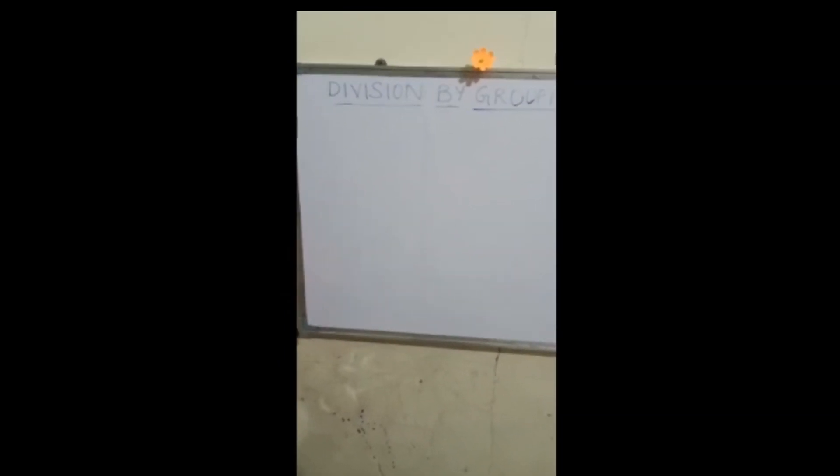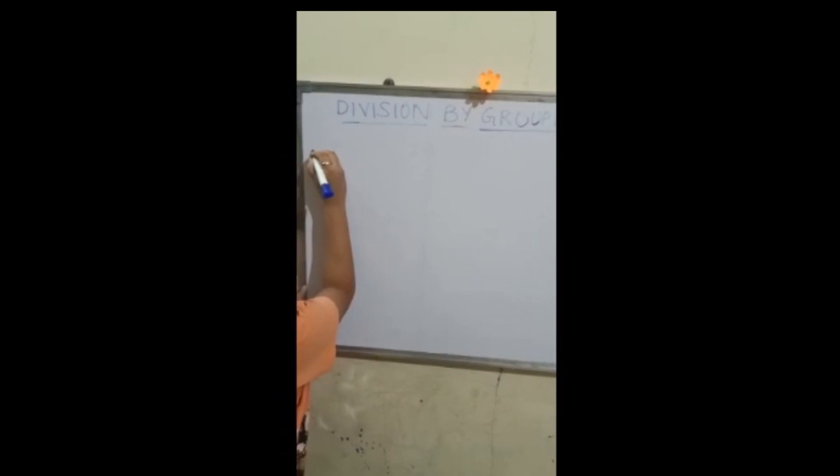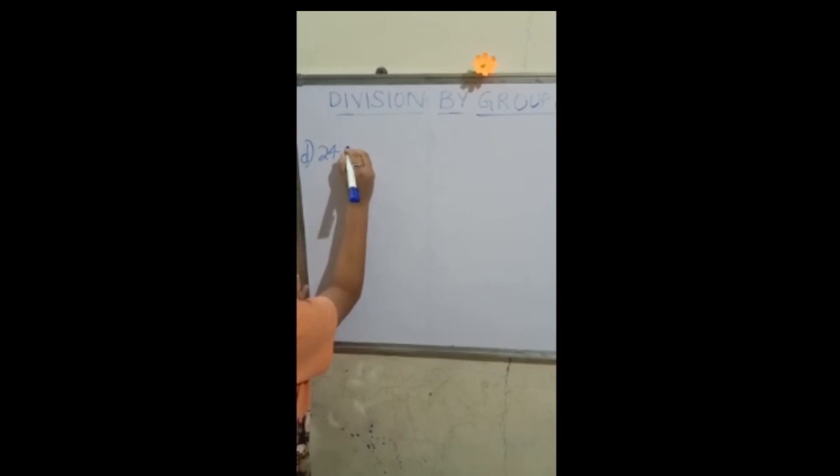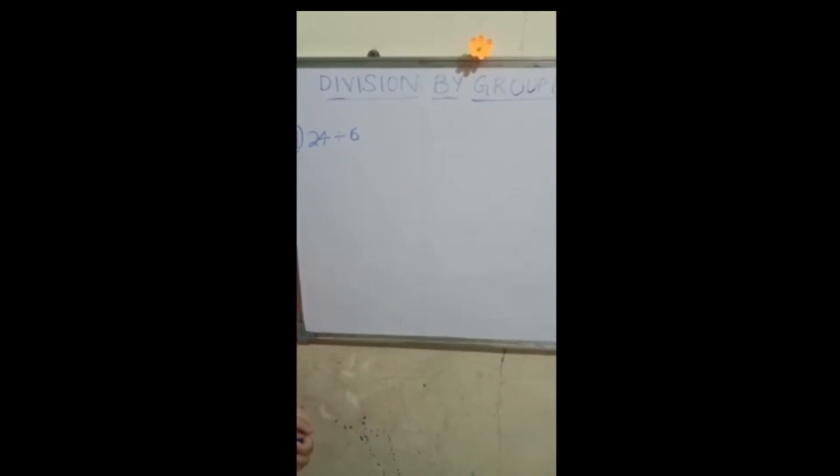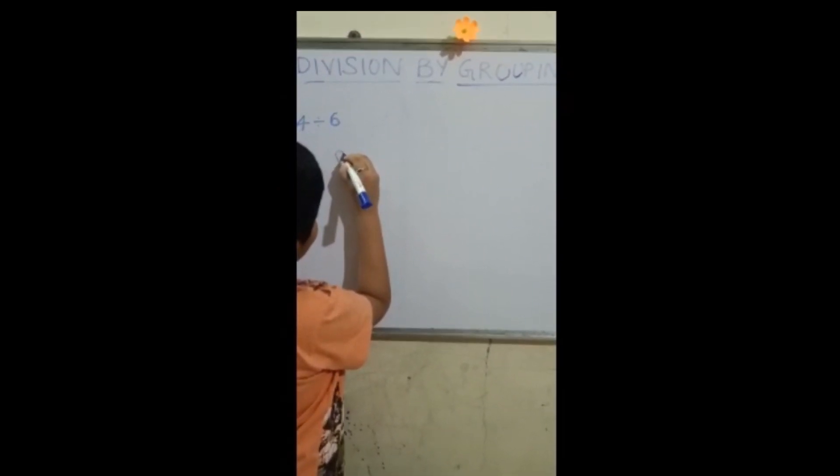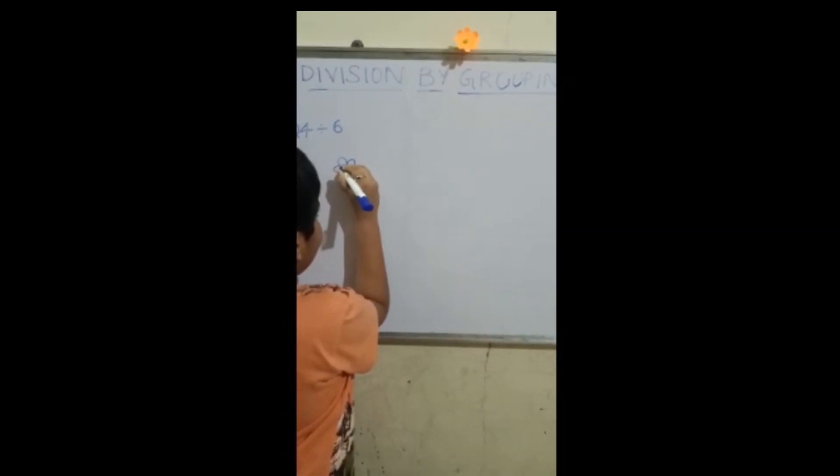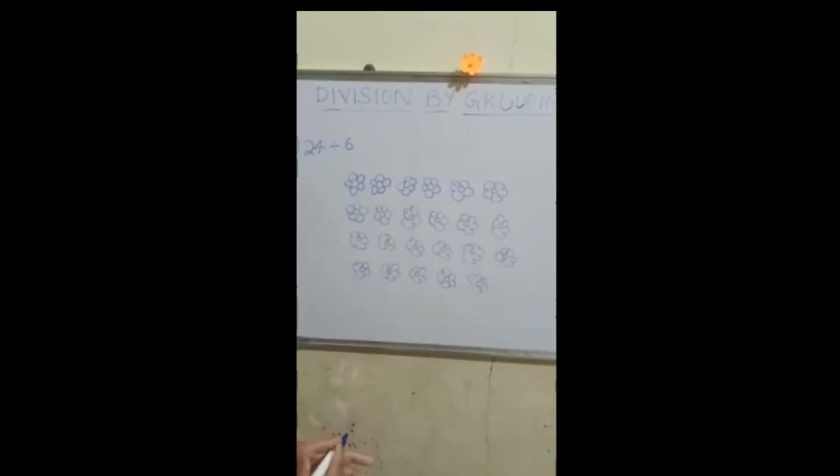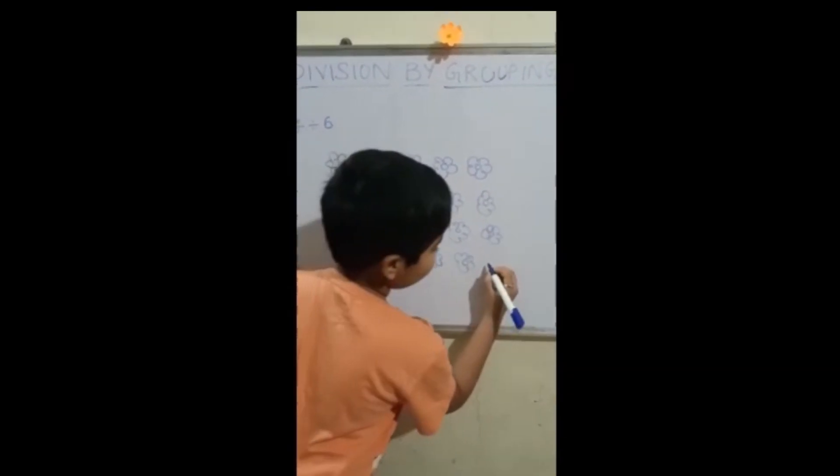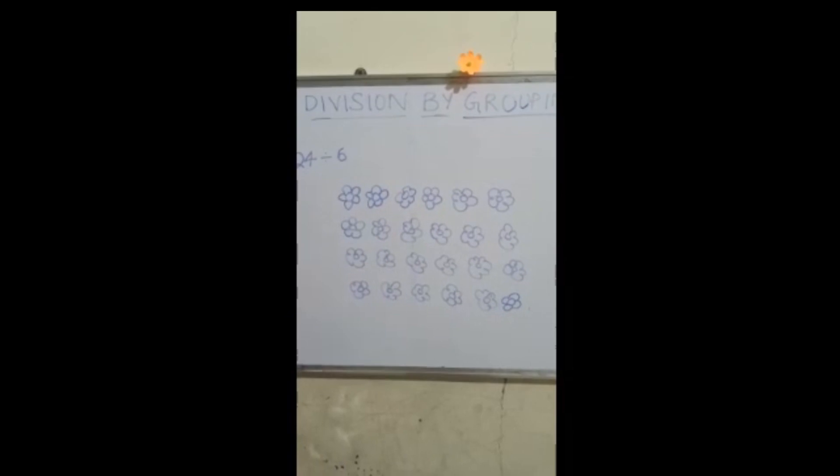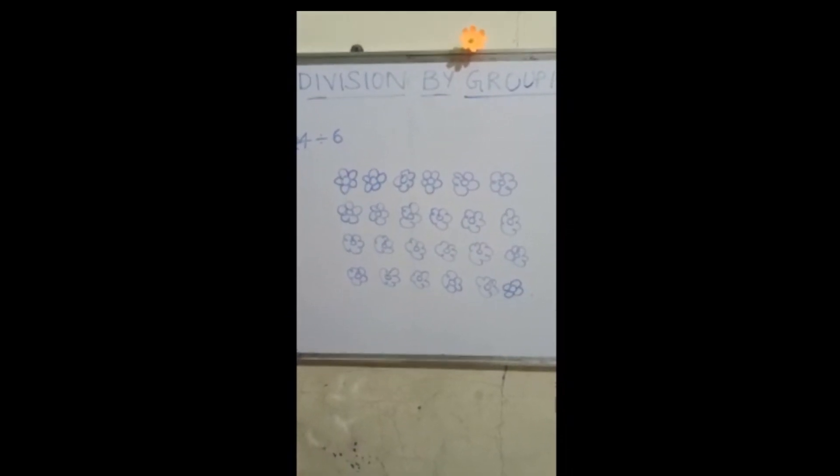Now let us see another example. Twenty-four divided by six. Now let us draw twenty-four flowers.